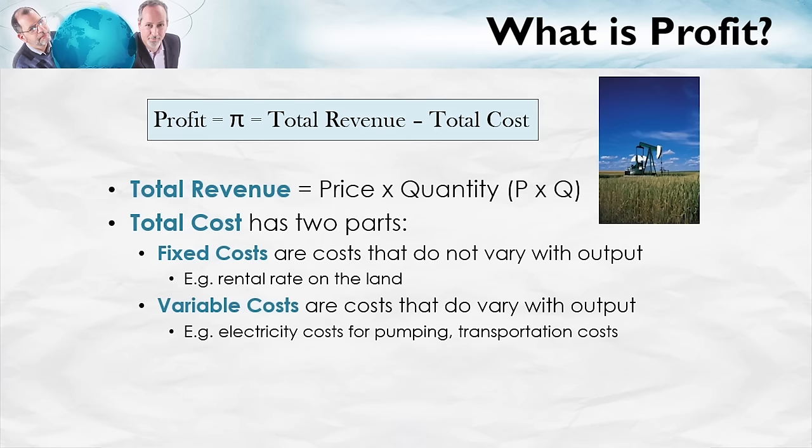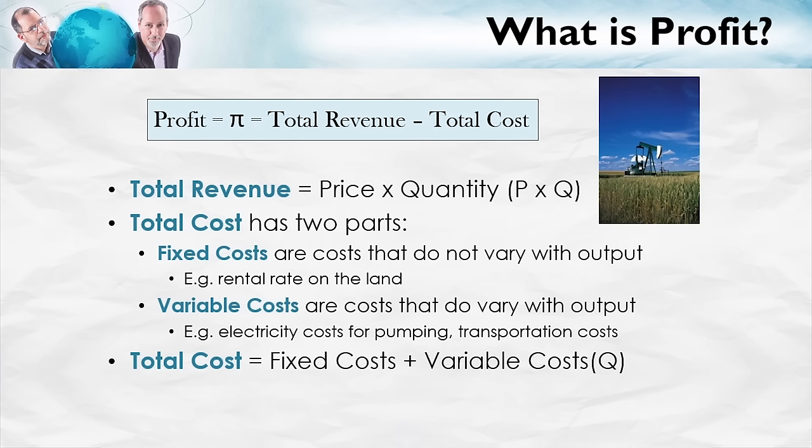To summarize on costs: total cost is equal to your fixed costs plus your variable costs, and these depend upon output.